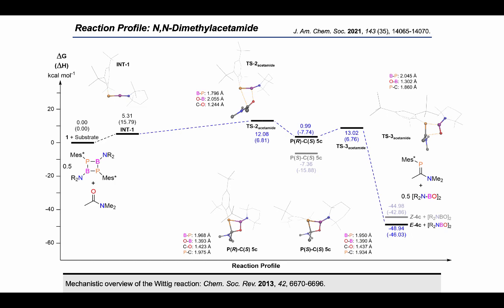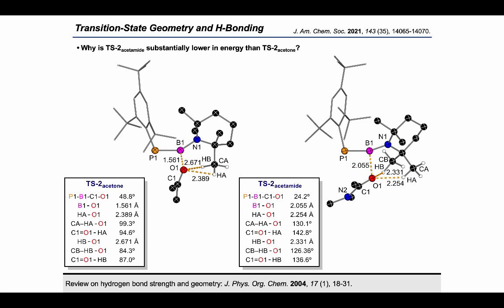So why is the acetamide transition state much lower in energy when compared to acetone? Firstly, TS2-acetone is highly puckered with a PBOC torsion angle of 48.8 degrees and a much shorter B=O bond length. Contrastingly, in TS2-acetamide, the two components come together much more synchronously and the developing PBCO ring is much flatter with a torsion angle of 24.2 degrees. This means there is less decrease in the B=N pi bonding as the phosphorus-boron-nitrogen angle is distorted away from linear in TS2. In addition, we observe that TS2-acetamide is perfectly oriented to enable hydrogen bonding between the carbonyl oxygen and the methyl groups of the TMP substituent, which can account for stabilizing interactions up to 4 kilocalories per mole. We see in TS2-acetone that these interactions are less prominent.